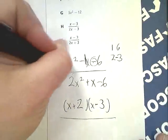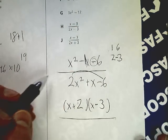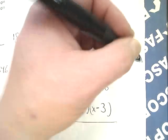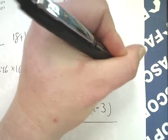For the bottom, I'm going to do slide and divide. Since there isn't a 1 in front of the x squared term, I'm going to do a slide. So 2 times 6 is 12. So this becomes x squared plus x minus 12.